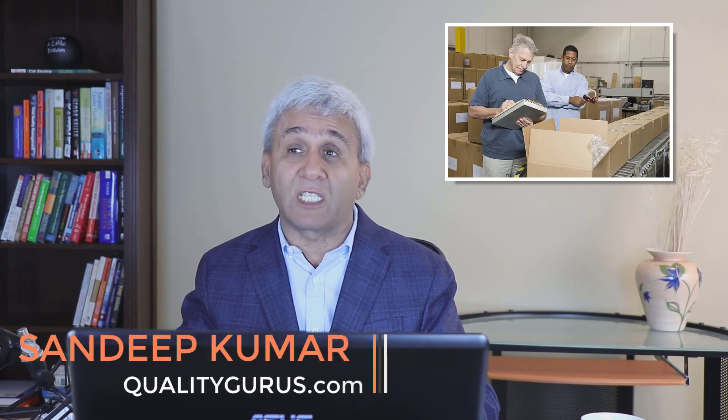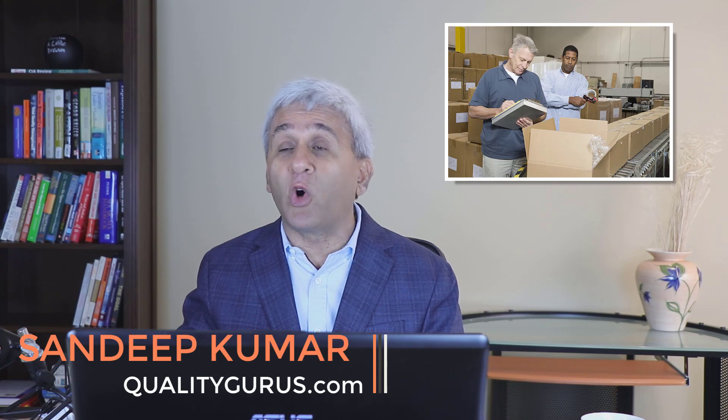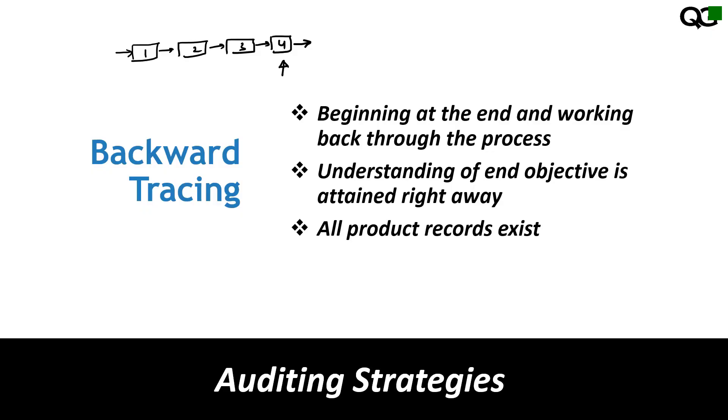You start with the dispatch section, pick a piece of item, look at its traceability, then go back to step four and check whether all the requirements related to that item were met or not. In this audit strategy, you begin with the end objective in mind. Backward tracing is best when you have good knowledge about all the processes, since you're picking a product at the end and need to know what should have happened before.